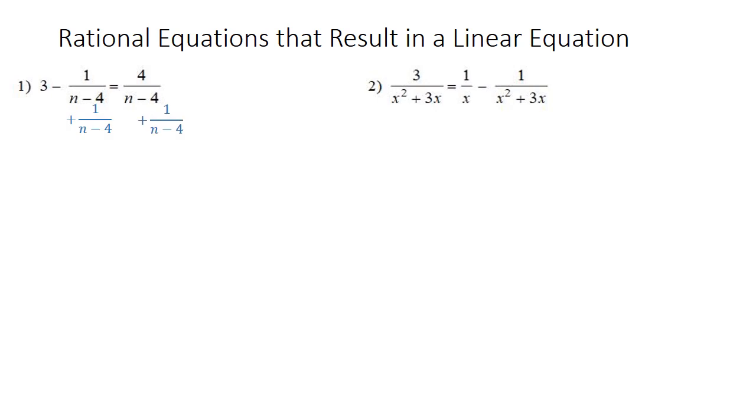So we have 4 over n minus 4 plus 1 over n minus 4 on the right hand side, so that's just going to be 5 over n minus 4. Then the 1 over n minus 4 on the other side, they cancel out. So we now have 3 equals 5 over n minus 4.